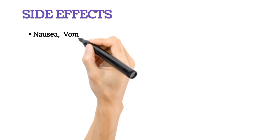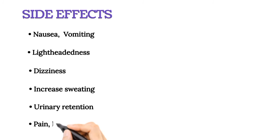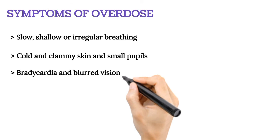Side effects: nausea, vomiting, lightheadedness, dizziness, increased sweating, urinary retention. IV injections sometimes cause pain, redness, itching, or swelling. Symptoms of overdose include slow, shallow, or irregular breathing, cold clammy skin, small pupils, bradycardia, and blurred vision.